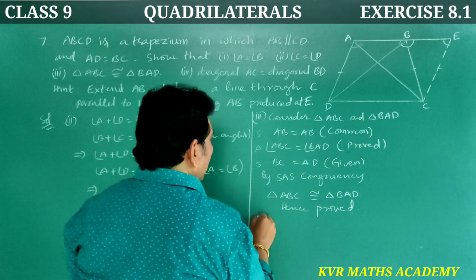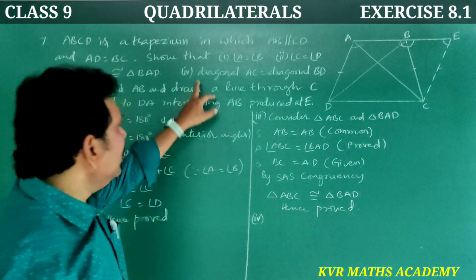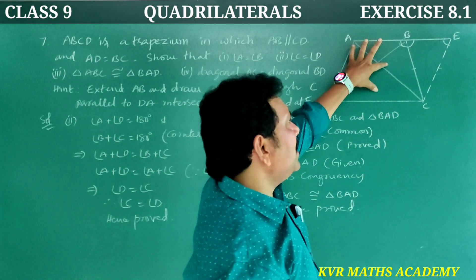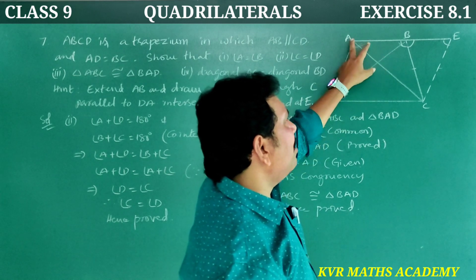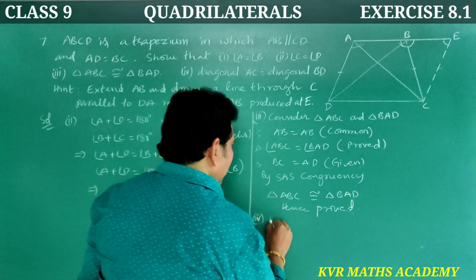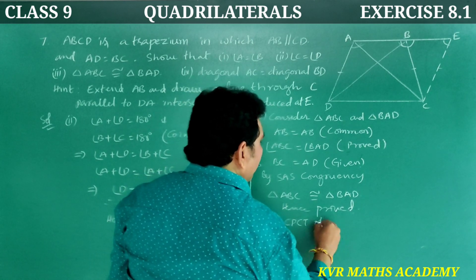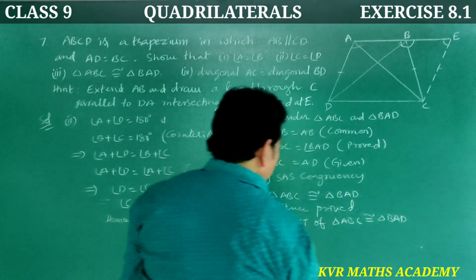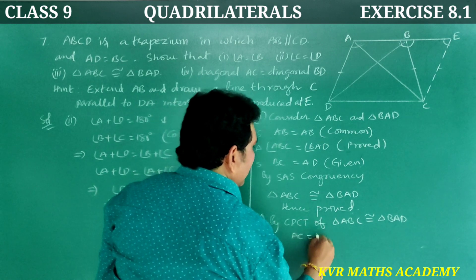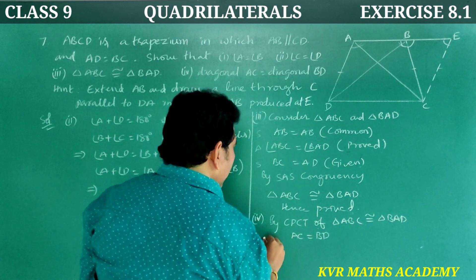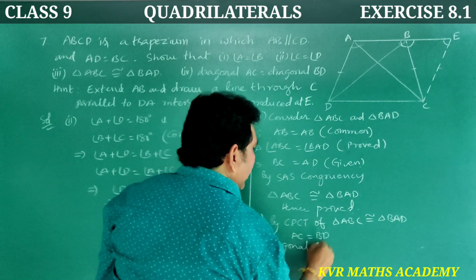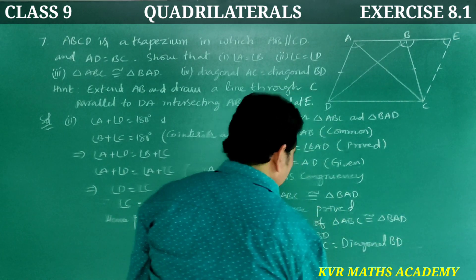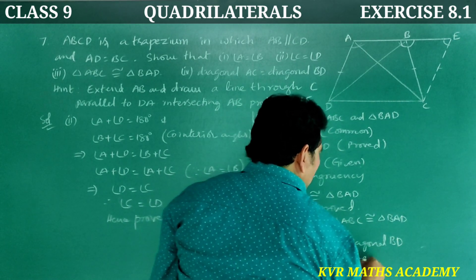Fourth and final: diagonal AC is equal to diagonal BD. Since triangle ABC is congruent to triangle BAD, by CPCT, AC is equal to BD. Therefore diagonal AC is equal to diagonal BD. Hence proved.